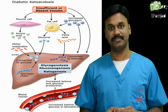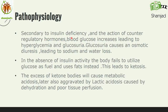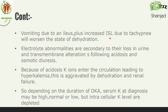Let's see more about pathophysiology. Secondary to insulin deficiency and the action of counter-regulatory hormones, blood glucose increases leading to hyperglycemia and glucosuria. Glucosuria causes an osmotic diuresis leading to sodium and water loss. In the absence of insulin activity, the body fails to utilize glucose as fuel and uses fat instead. This leads to ketosis. The excess of ketone bodies will cause metabolic acidosis, later also aggravated by lactic acidosis caused by dehydration and poor tissue perfusion. Vomiting due to ileus, plus increased sensible loss due to tachypnea, will worsen the state of dehydration. Electrolyte abnormalities are secondary to their loss in urine and transmembrane alterations following acidosis and osmotic diuresis. Because of acidosis, potassium ions enter the circulation leading to hyperkalemia.